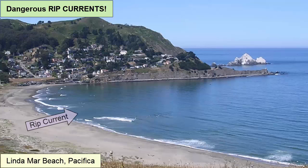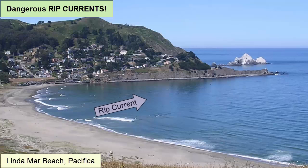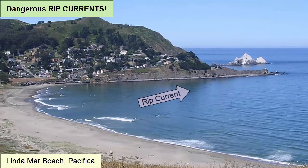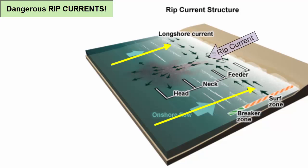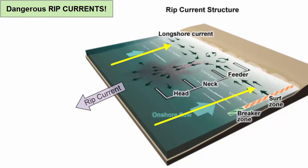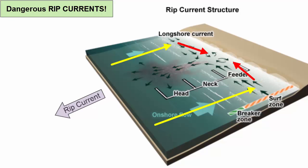Rip currents are streams of water moving perpendicularly off the beach. They are caused by a buildup of water along the shore. When enough water piles up, it will force itself oceanward through the oncoming waves. As the waves crash onto the shore, their water is funneled to the left and right where it collects. Rip currents then return it oceanward.